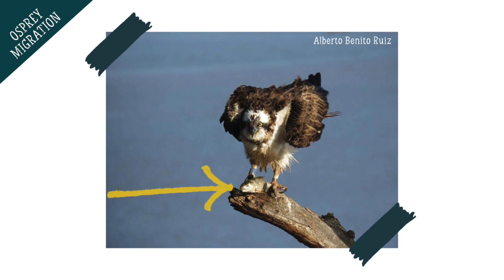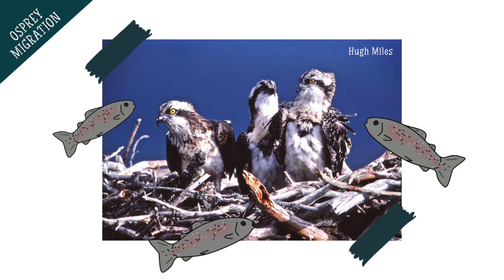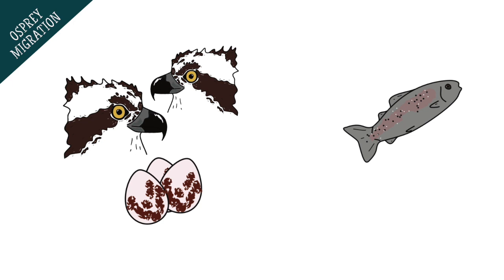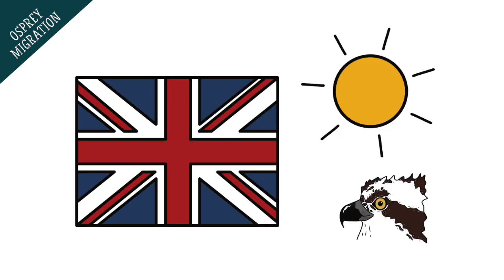We know that ospreys are predators because they catch and eat fish, and we also know it's important for parent ospreys to provide lots of fish for their chicks to grow through the summer. So if you were an adult osprey wanting to breed, you would want to nest somewhere where lots of food was available, which means that the UK in the summer is the perfect place to be.